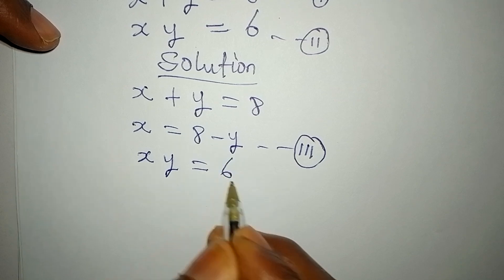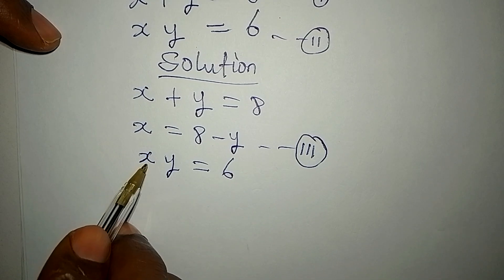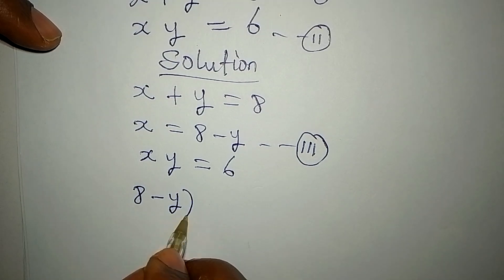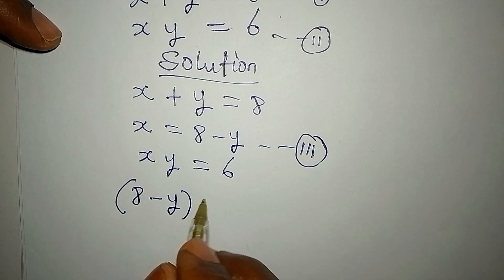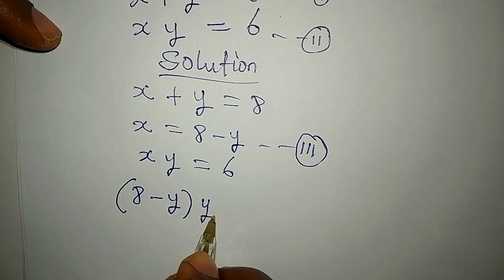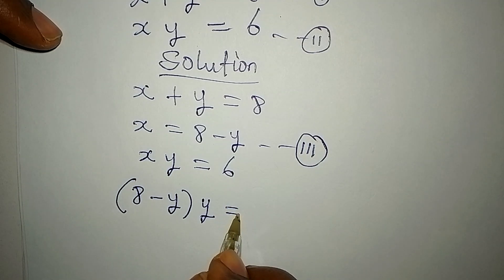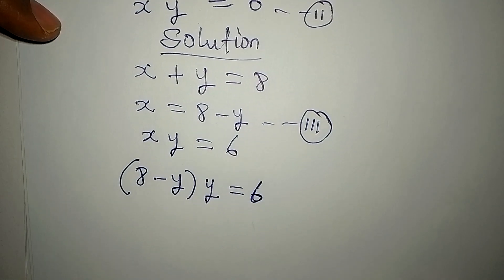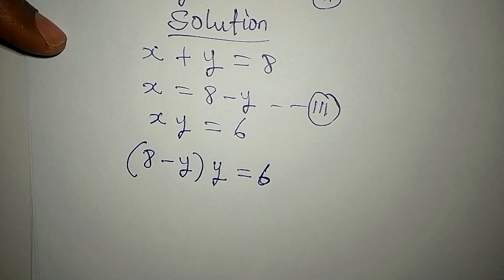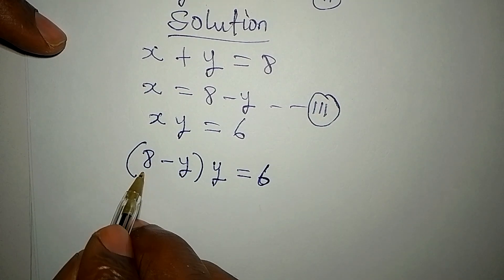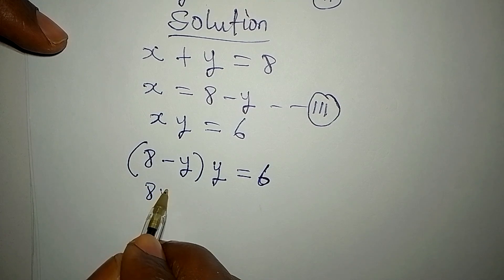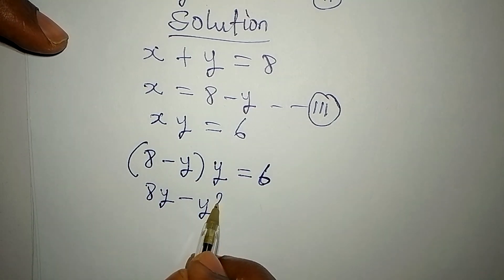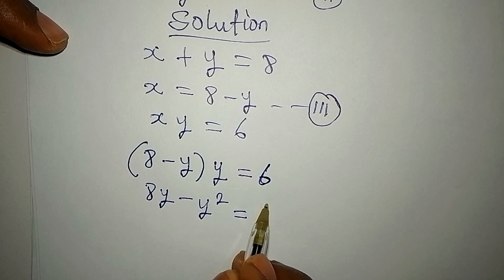Now substitute equation three into equation two. Our equation two is xy equals six. So in place of x I'm going to write eight minus y, close the bracket, and then y outside will appear, and the whole of this is equal to six. We open the bracket: eight multiplied by y gives eight y, and y times y gives y squared, and this equals six.